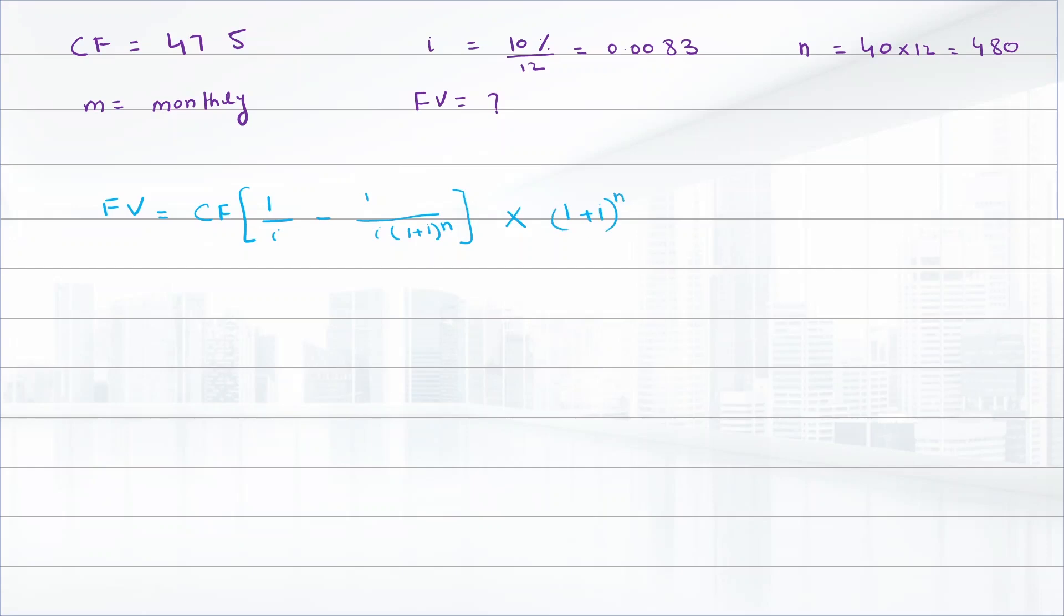There are multiple formulas that are used to calculate the future value of annuity. But the simplest approach is to multiply the present value of annuity with 1 plus I raised to power N. So by putting values,